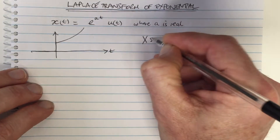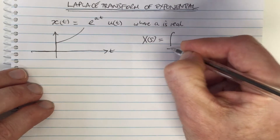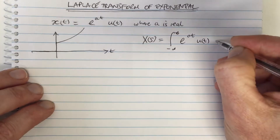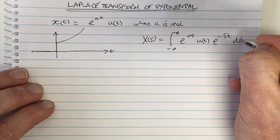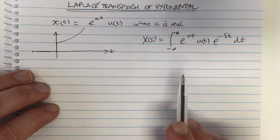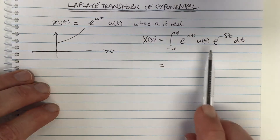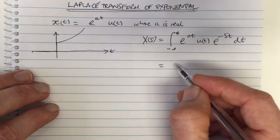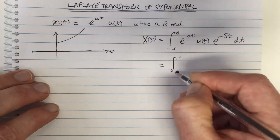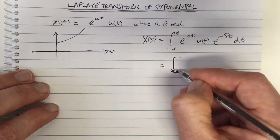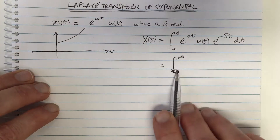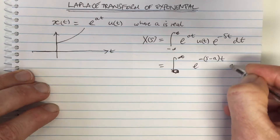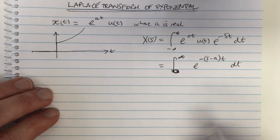The Laplace transform equals the integral from negative infinity to infinity of e^(at) times u(t) times e^(−st) dt. Note that this is also the Fourier transform of a weighted function, which we'll show in a moment. Collecting terms and using the fact that u(t) equals one for t ≥ 0, this becomes the integral from zero to infinity of e^(−(s−a)t) dt.